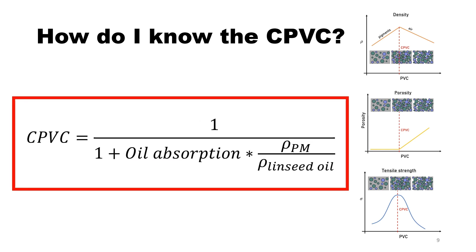To calculate the CPVC you can use the formula shown here. It contains the oil absorption number of your pigment, the pigment density, as well as the density of linseed oil that is used to determine the oil absorption number. However, the CPVC can depend on a number of factors including the specific type of pigment and binder used, the particle sizes, shapes, and other factors. Therefore, the calculation gives a rough idea of the CPVC, but it often needs to be determined experimentally to be sure — and you can do that by measuring the properties previously discussed.